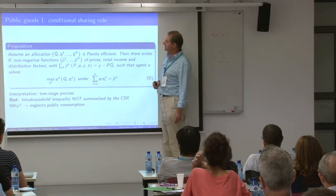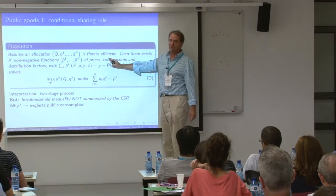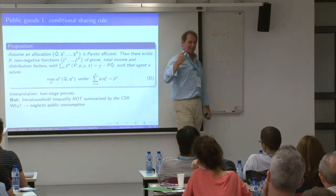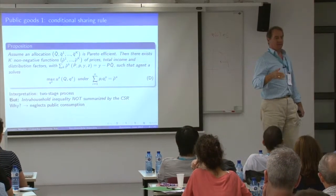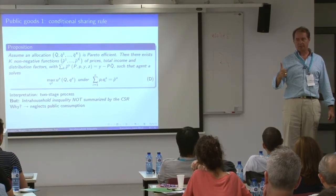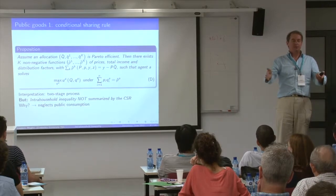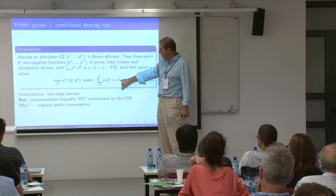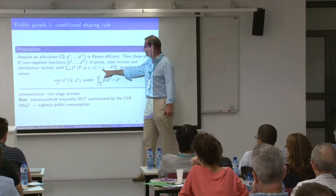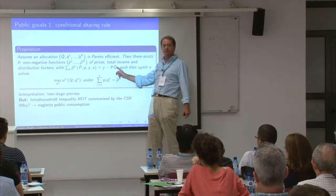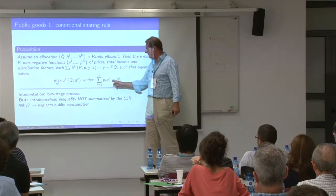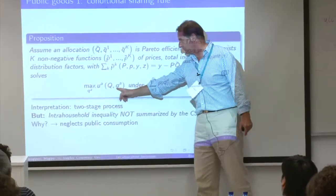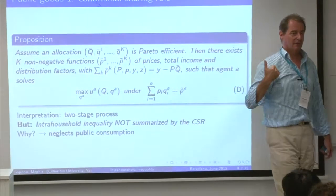With public goods, it's still a two-stage process. Stage one: we decide how much to spend on public goods, and then split the remaining money between husband and wife — I call what she gets rho-tilde_A, what he gets rho-tilde_B. Now they don't add up to income, but to income minus the amount spent on public goods. Stage two: everybody does whatever they want using private consumption, conditional on the level of public good decided up front.